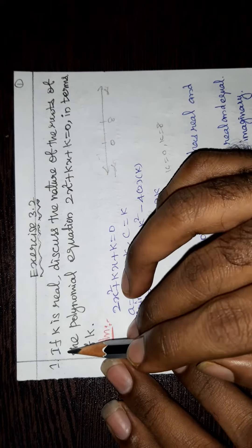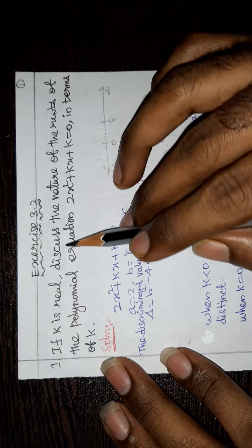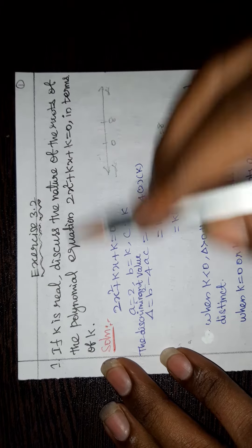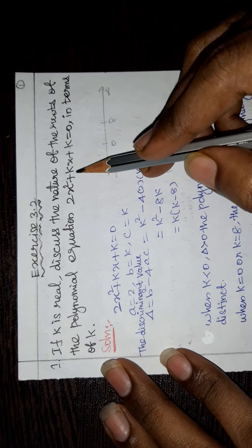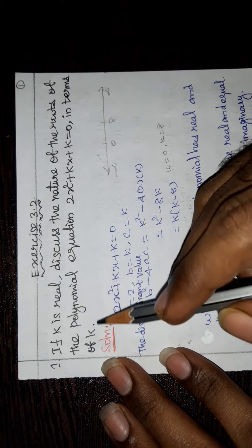Exercise 3.2, Question number 1. If k is real, discuss the nature of roots of a polynomial equation 2x² + kx + k = 0 in terms of k.